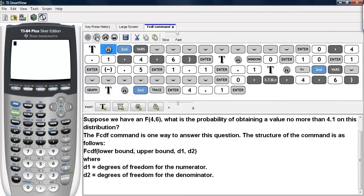Suppose we have an f-distribution whose numerator has 4 degrees of freedom and whose denominator has 6 degrees of freedom. What is the probability of obtaining a value no more than 4.1 on this distribution?